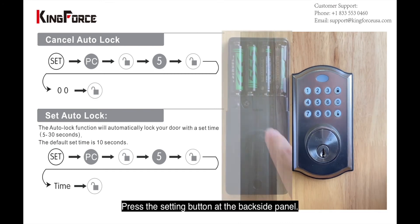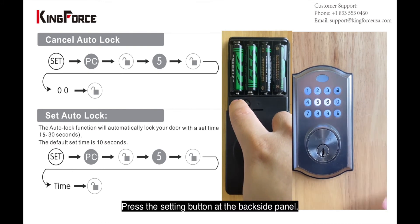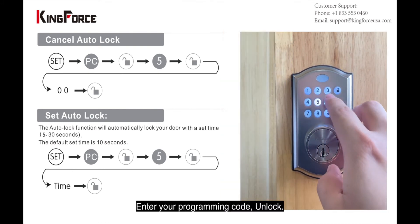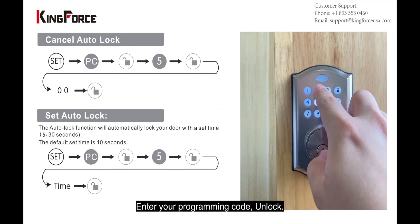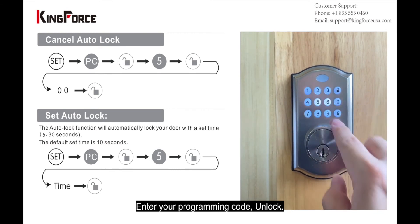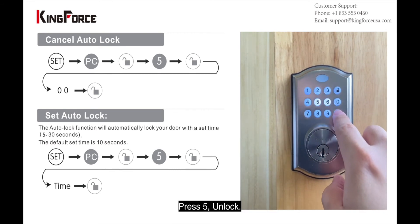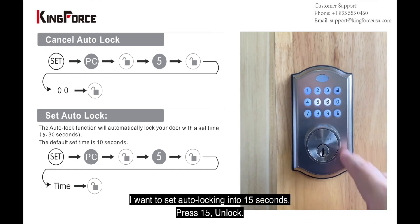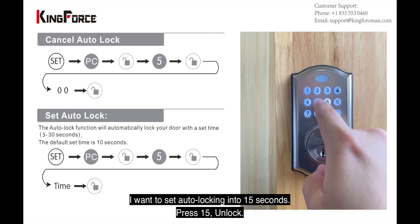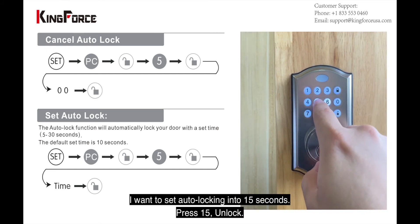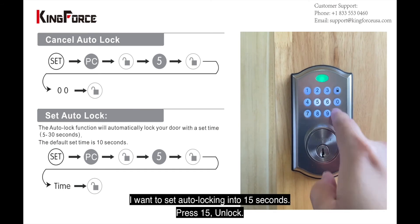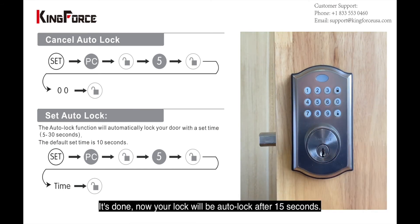Press the setting button and enter the programming code, then unlock. Press number five and unlock. Then enter 15 seconds — unlock. Done. Now your lock will auto-lock in 15 seconds.